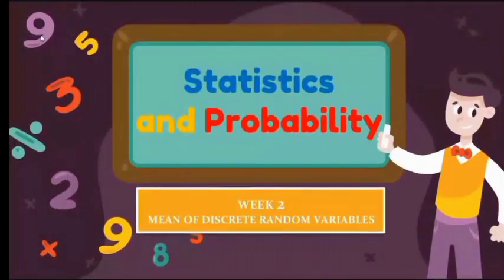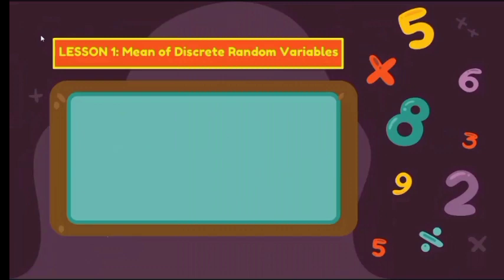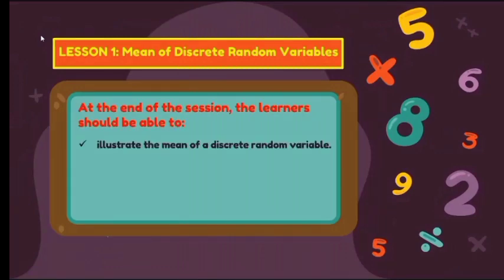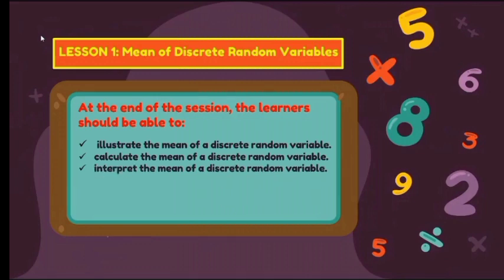Good day everyone, senior high school students. Statistics and Probability, Week 2: Mean of the Discrete Random Variable. For Lesson 1, mean of the discrete random variable, at the end of the session the learner should be able to illustrate, calculate, and interpret the mean of the discrete random variable, and solve for the expected values.